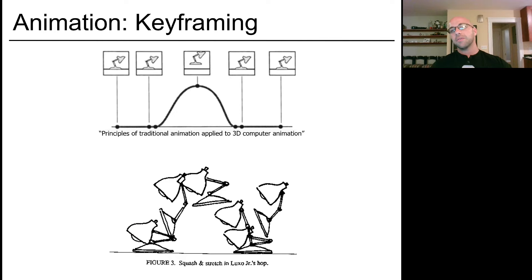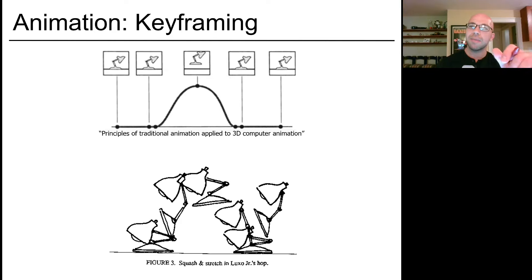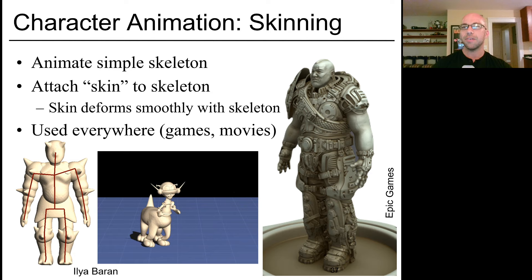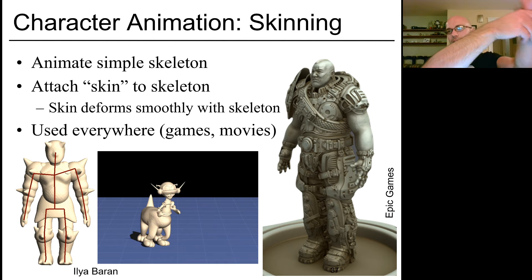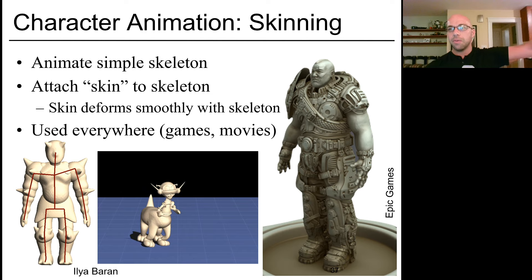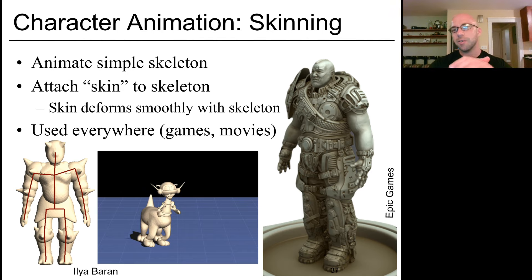Then we'll talk about animation. There's a strategy called keyframing, where I specify some key poses of an object and the different motion is filled in between. Many keyframing techniques used on the computer are motivated by ideas of hand-drawn animation that predate computer technology. We'll also talk about other techniques. For character animation, we'll talk quite a bit about skinning — the idea is that the animator might animate the bones of an animated character, but we're all covered in squashy skin that moves with the bones. The technique of skinning essentially attaches this bendy skin to a rigid skeleton that you can animate, and this is used just about everywhere in computer graphics, games, and movies.